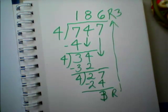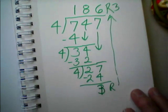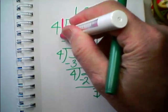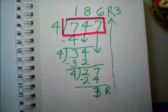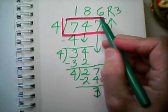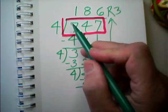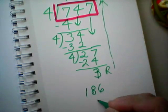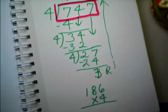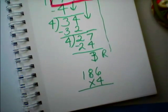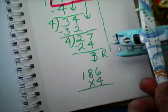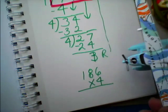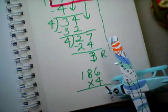Now I want to check something out here. Let's try checking this problem with multiplication. So we get your 747 right there, and then we had 186. We'll forget about this remainder. So what I want you to do is take 186 and multiply it times 4 and see what you get.